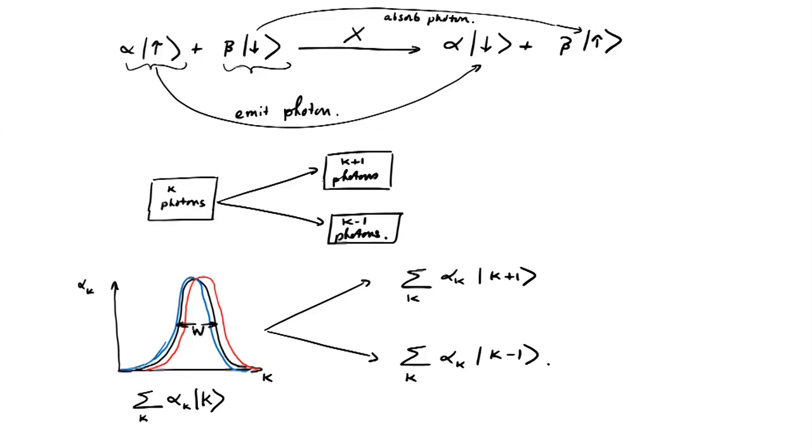But in either case, because the width of this Gaussian, w, the width is large, well, you don't really notice the shift of one in this Gaussian. So in other words,